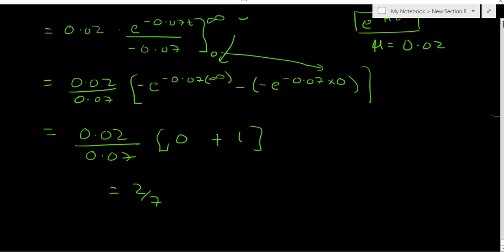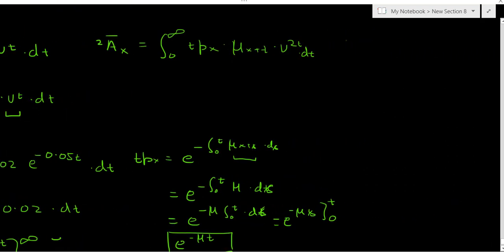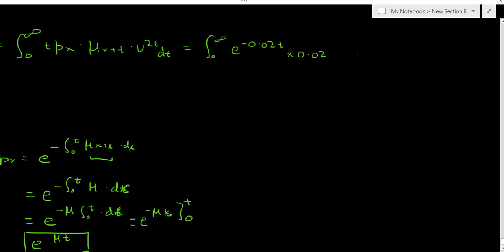That is how you solve such questions. Let's move to the next question — the first past exam question in the revision notes. It says: let X be a random variable representing the present value of benefits of a whole life assurance contract; let Y be the random variable representing the present value of benefits of a temporary assurance with a term of n years.